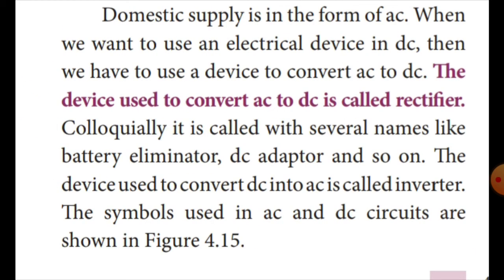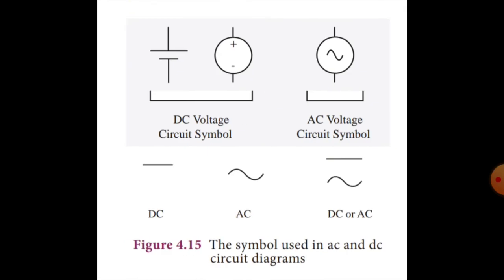Domestic supply is in the form of AC. When we want to use an electrical device on DC, we have to use a device to convert AC into DC. The device used to convert AC into DC is called a Rectifier. Colloquially, it is called by several names like battery eliminator or DC adapter. The device used to convert DC into AC is called an Inverter. The symbols used in AC and DC circuits are shown in figure 4.5.